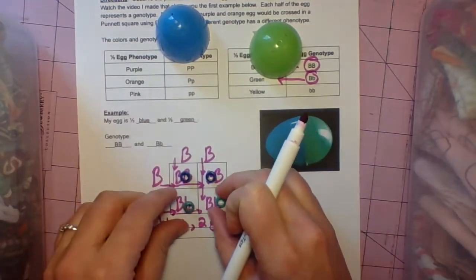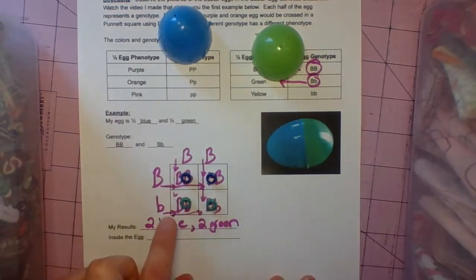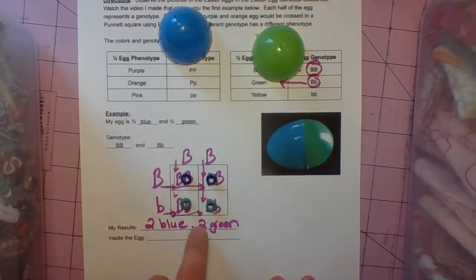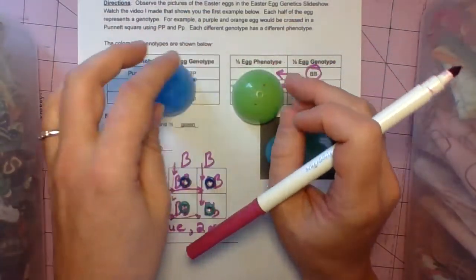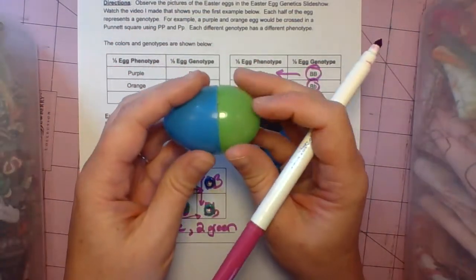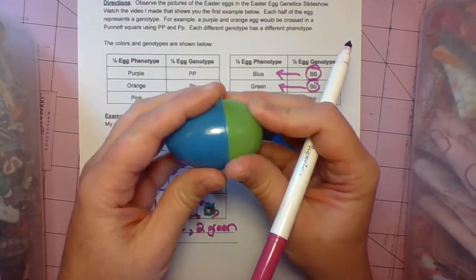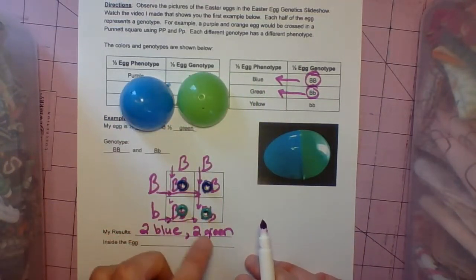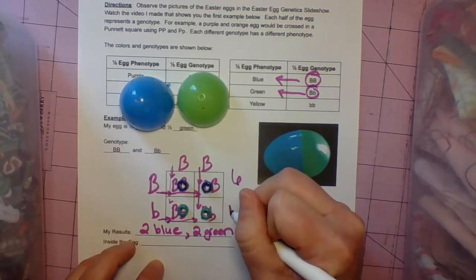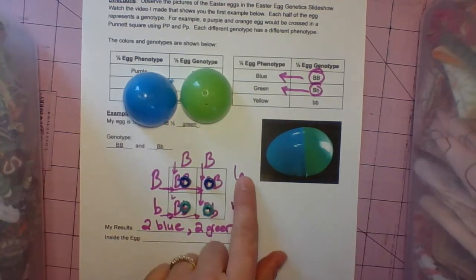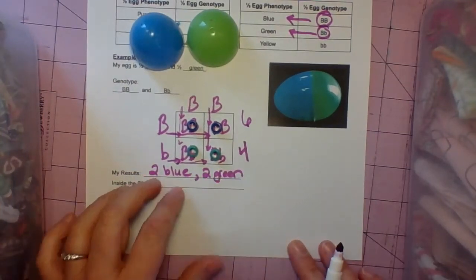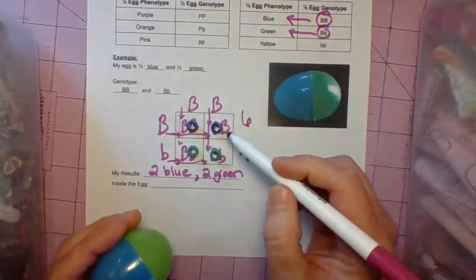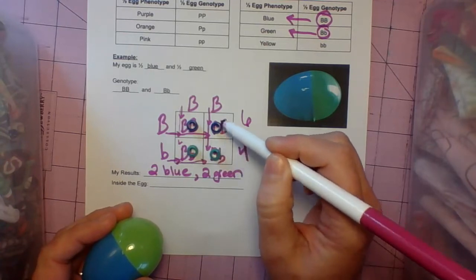I can match these up to the Punnett square results. If that egg fertilized that sperm, these are the four possibilities. Punnett squares don't tell us this is the way it will be. This is just a prediction. If these two Easter eggs have 10 Easter egg babies, about five will be blue and about five will be green, about half and half. Maybe six turn out to be blue and four turn out to be green, but still that's about half and half. That's why we use Punnett squares. It predicts the results of a cross.